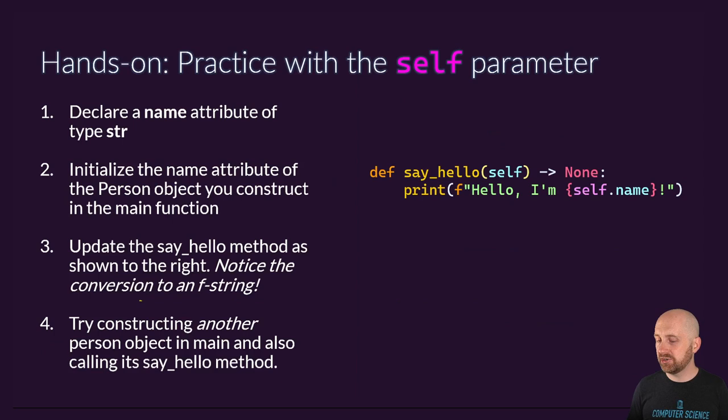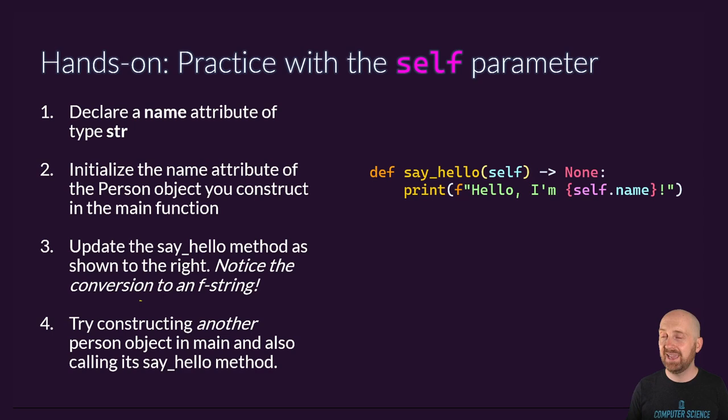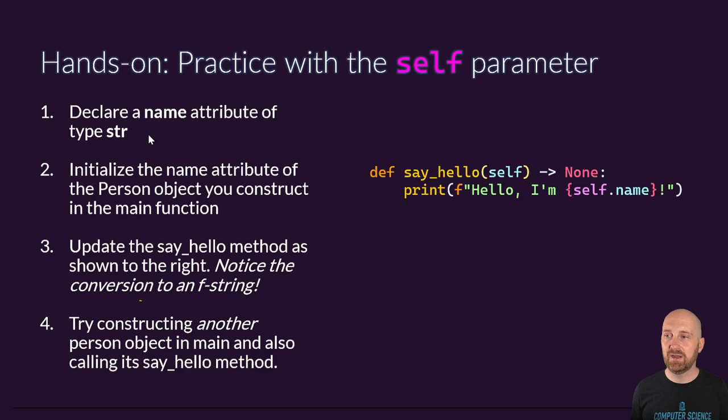To get a feel for this before the big reveal of why methods are so cool, pause the video and try following the instructions on this slide. Update the say_hello function to print the object's name, then try constructing another Person object in the main function so you have two Person objects with different names, and try calling say_hello from that object as well. Once you've got that running, unpause the video and we'll continue.